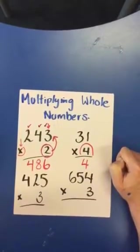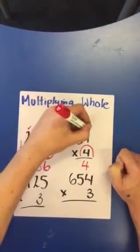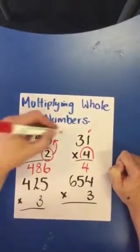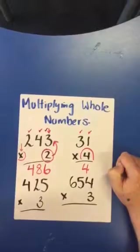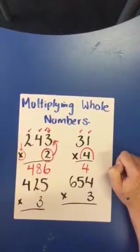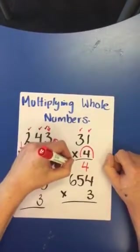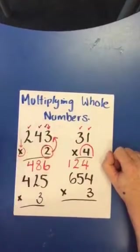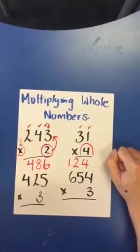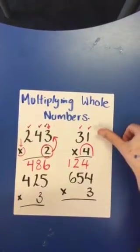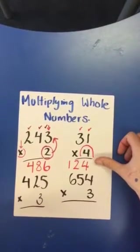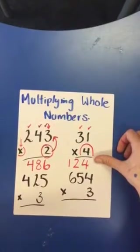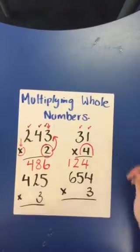The next thing we do is 4 times 3. So 4 times 1 is done. 4 times 3 equals 12. If you had 4 lots of 31 children, you would have 124 in total.